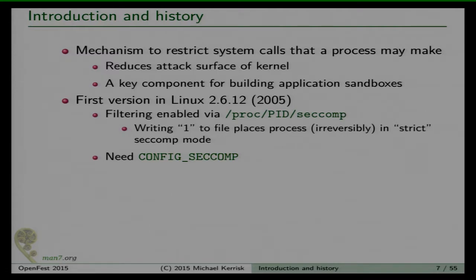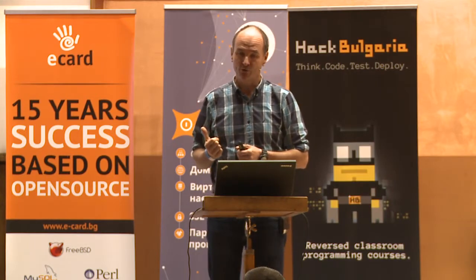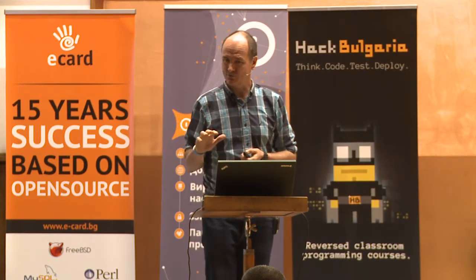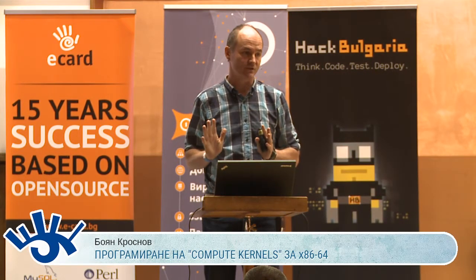When in strict SecComp mode, your process was limited to just four system calls: read and write for input and output, exit to terminate the process, and sigreturn — the system call the kernel uses underneath the covers to allow signal handlers to be implemented. If you tried to do any other system call, you got a SIGKILL signal and your process was killed.